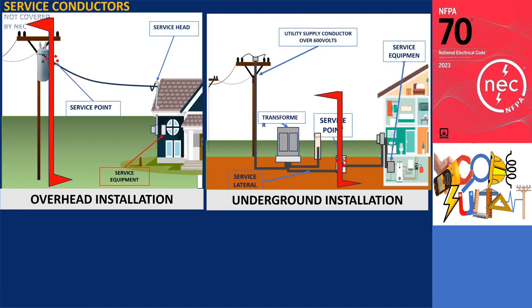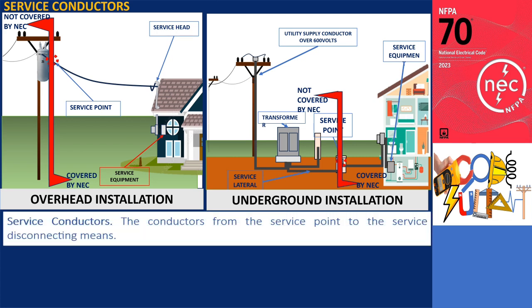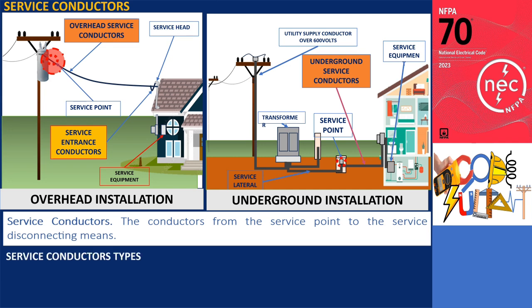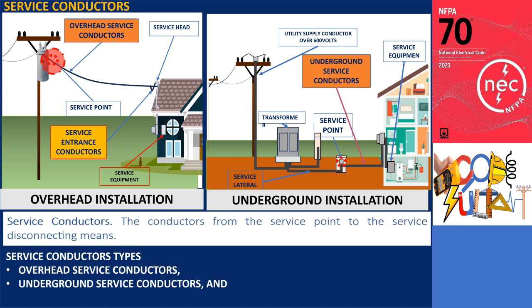The National Electrical Code covers only the conductors on the premises wiring side of the service point. These conductors are known as service conductors, as defined by the NEC, and they extend from the service point to the service disconnecting means. In the given illustration, the service point represents the connection to the terminals on the load side of a utility transformer. The conductor that runs from the service point to the service disconnect is specifically referred to as the service conductor. According to the NEC, the term service conductors encompasses various types such as overhead service conductors, underground service conductors, and service entrance conductors.